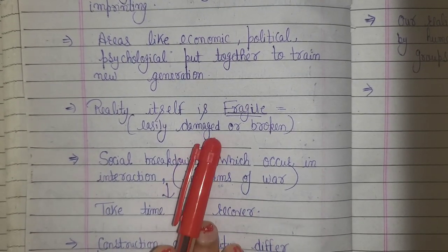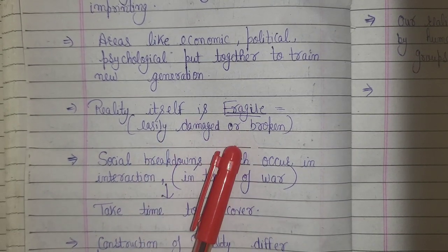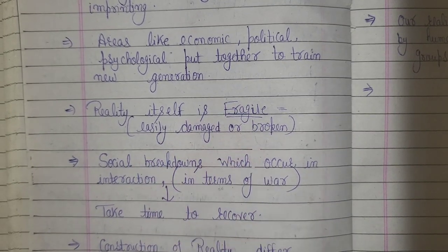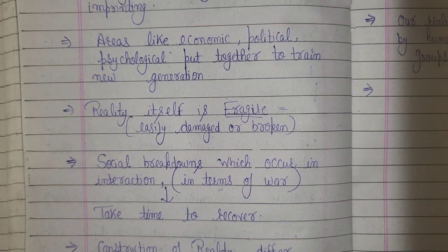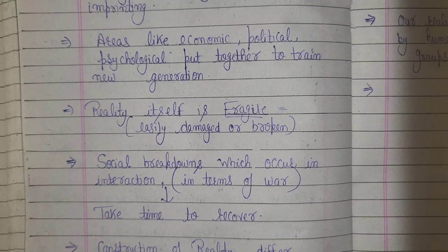Reality itself is fragile. What we say about reality — that reality can easily break and change. What you say about reality is not fixed reality; we can change it according to perspective. If you show or pretend something about reality, it changes according to circumstances.